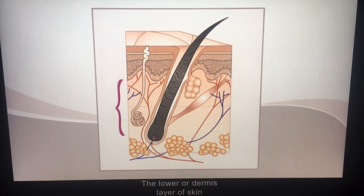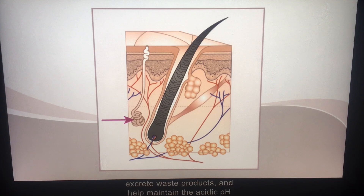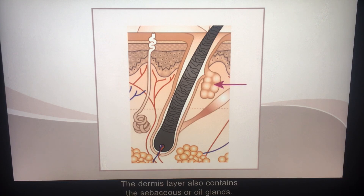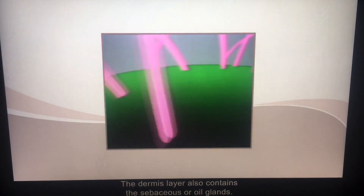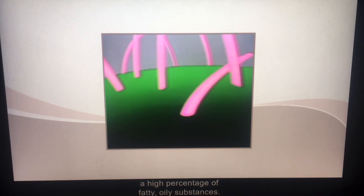The dermis layer of skin is made up of connective tissues. Also found in the dermis are the pseudoriferous, or sweat glands. These control and regulate body temperatures, excrete waste products, and help maintain the acidic pH factor of the skin. The dermis layer also contains the sebaceous, or oil glands, which produce sebum, a complex secretion containing a high percentage of fatty, oily substances.